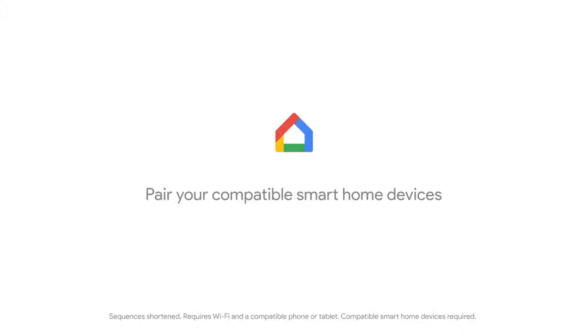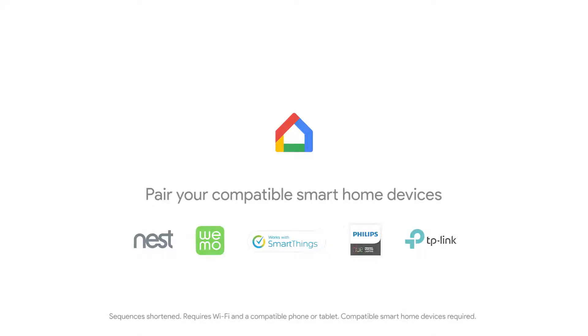Open the Home Control tab in the Google Home app to add compatible smart home devices. Then use your voice to control your smart home.